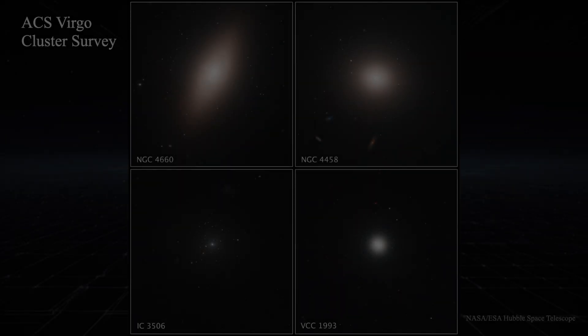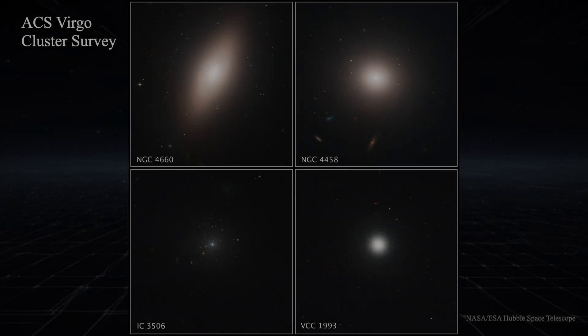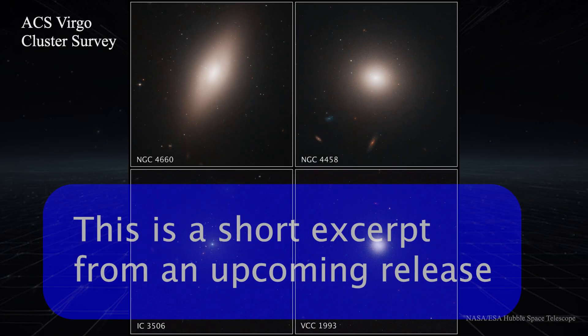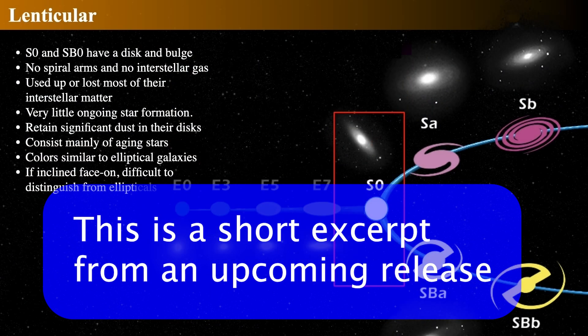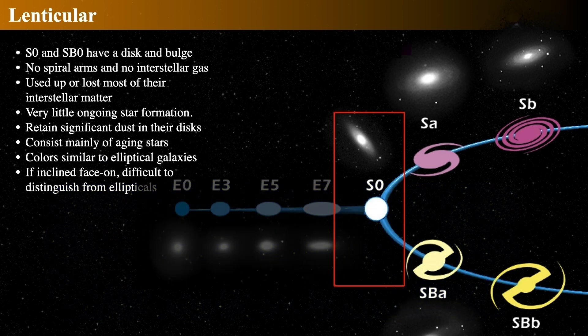Now let's see what other kinds of galaxies live in our cosmic zoo. Lenticular galaxies, classified as S0 or SB0, sit between the ellipticals and the spiral galaxies.